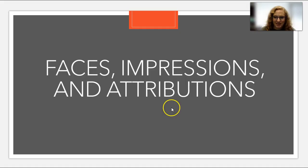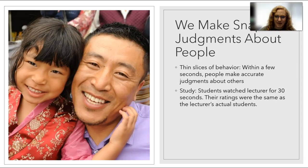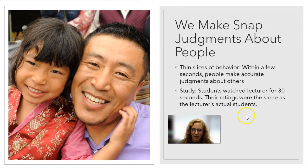Let's jump into our first section on faces, impressions, and attributions. You've probably heard the phrase 'don't judge a book by its cover,' meaning you can't just look at somebody and know everything about them — you may have a wrong impression. But the snap judgments we make about people often are correct. In psychology we call this thin slices of behavior: when you see somebody for just a few seconds, we tend to make pretty accurate judgments about others — not always, but pretty good.